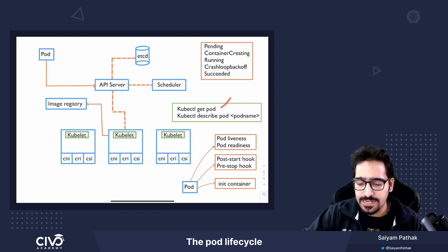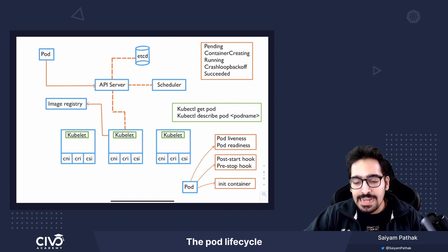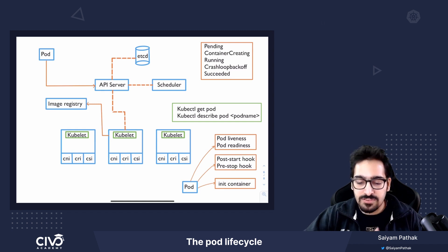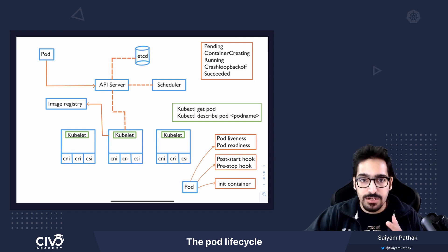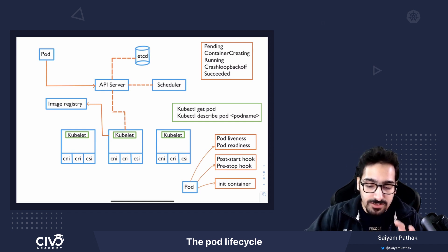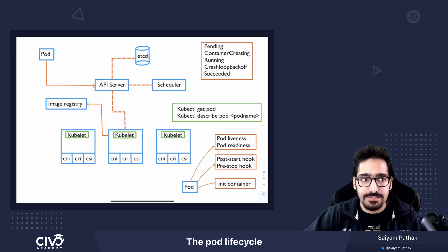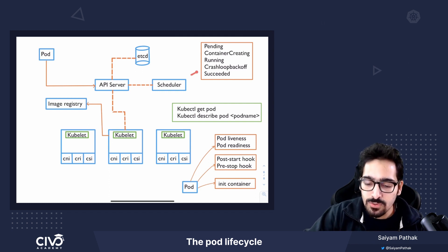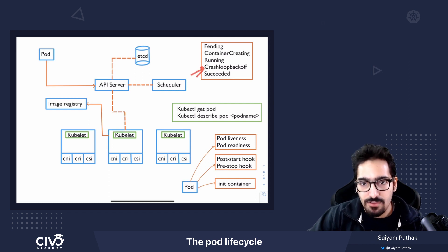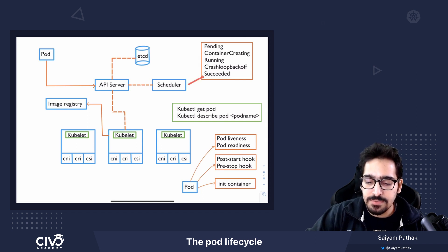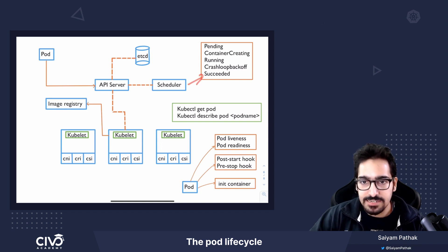When we do a kubectl get pods, we can see the state. There can also be a situation where the process dies too many times within a pod — then it can go to crash loop back off. And whenever it succeeds, it will be in the succeeded state.